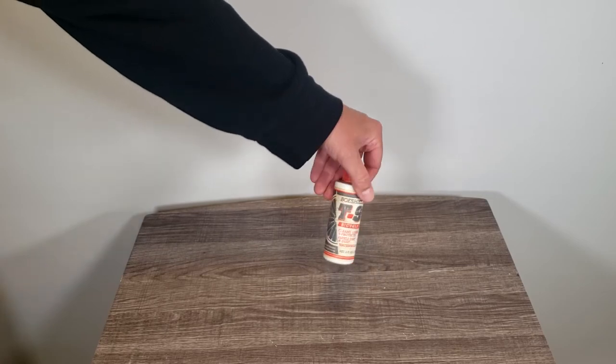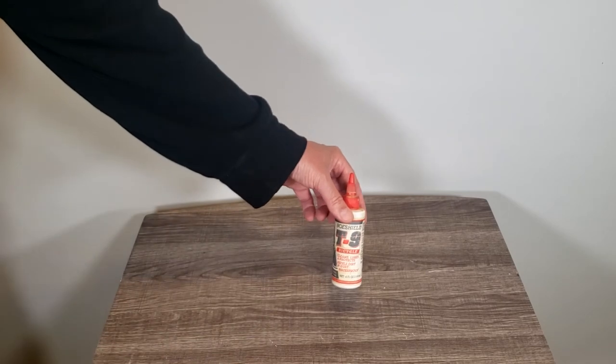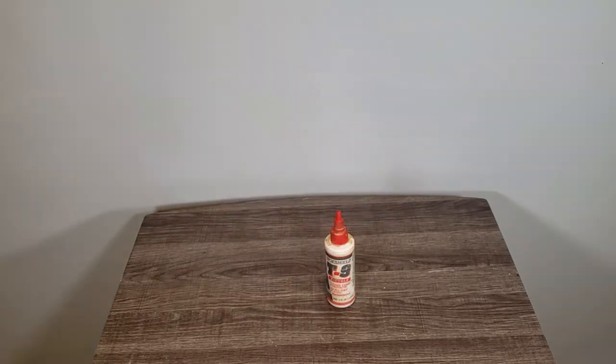You could use it on brake cables and stuff, but it's a great product. It's held up well. I've still got at least an ounce or so left in this four-ounce bottle after several seasons of using it on my bike. Pretty happy with it. It's a good product, the old T9.